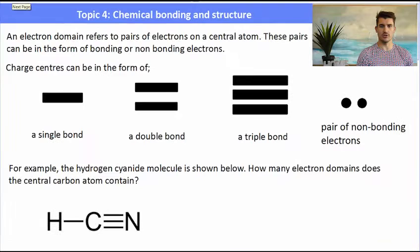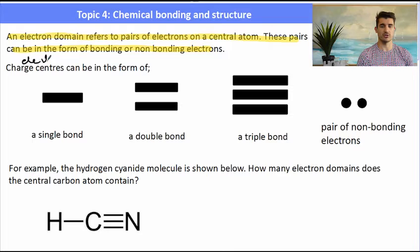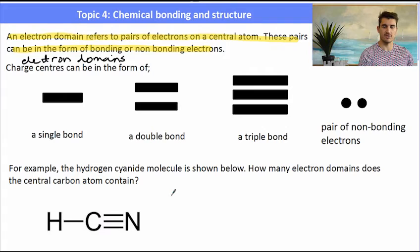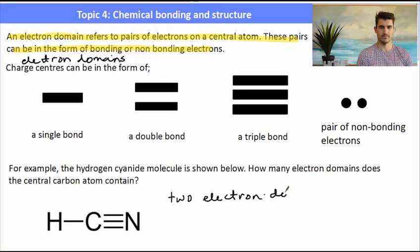The final thing for this video is electron domains. An electron domain refers to a pair of electrons on a central atom, and these pairs can be in the form of single, double, or triple covalent bonds, or a pair of non-bonding electrons. For example, in hydrogen cyanide, HCN, the central carbon atom has a single carbon-to-hydrogen bond and a triple carbon-to-nitrogen bond. The number of electron domains is the number of regions where electrons are found — so HCN has two electron domains.